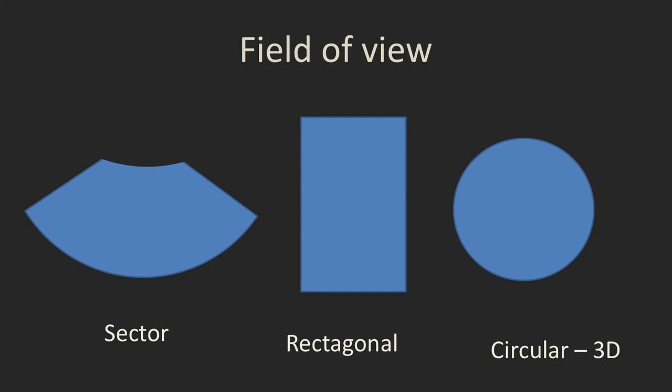Different probes will have different fields of view. One of the most common is a wedge-shaped or sector field of view. You're going to use that if you're imaging the kidneys or the liver. A rectangular field of view, which is narrow, is what you're going to use if you're imaging something like scrotal or testicular ultrasound, breast ultrasound, or more superficial musculoskeletal structures.